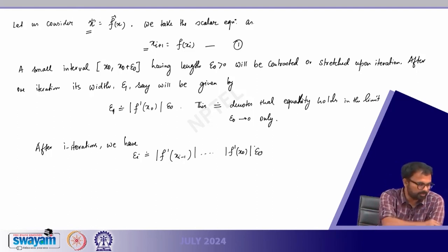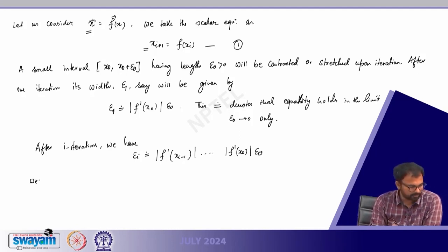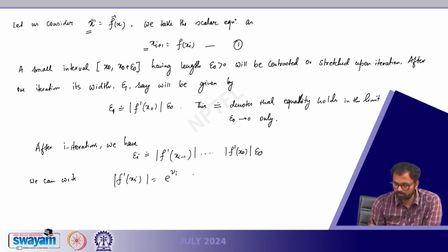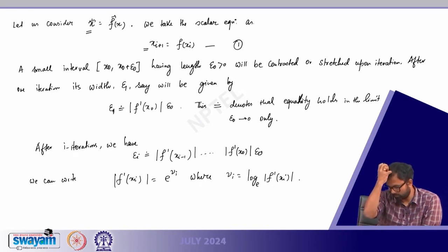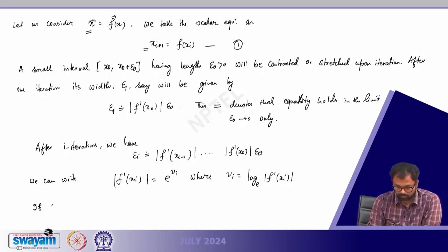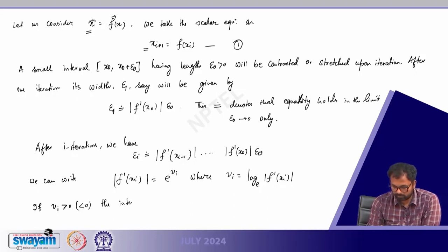That is the basic structure, which we already discussed in detail in the last class. Today we try to understand the equivalent setup — how this instrument actually works. From this figure, someone sitting here and looking at the interference can see two light beams coming from M1 and M2. One ray comes directly from M2 and another is reflected by the beam splitter, and they interfere to produce ray 4, giving us the interference pattern.